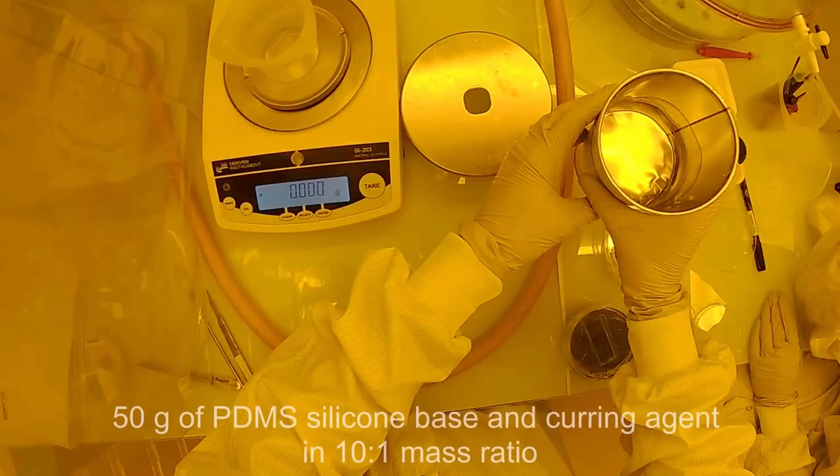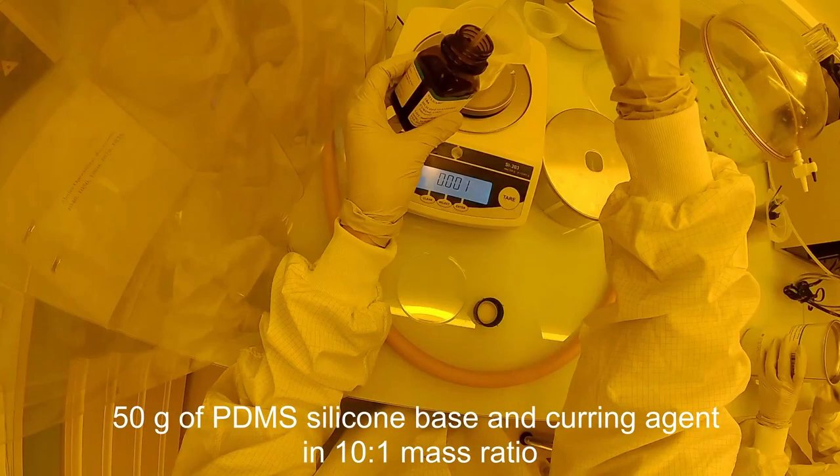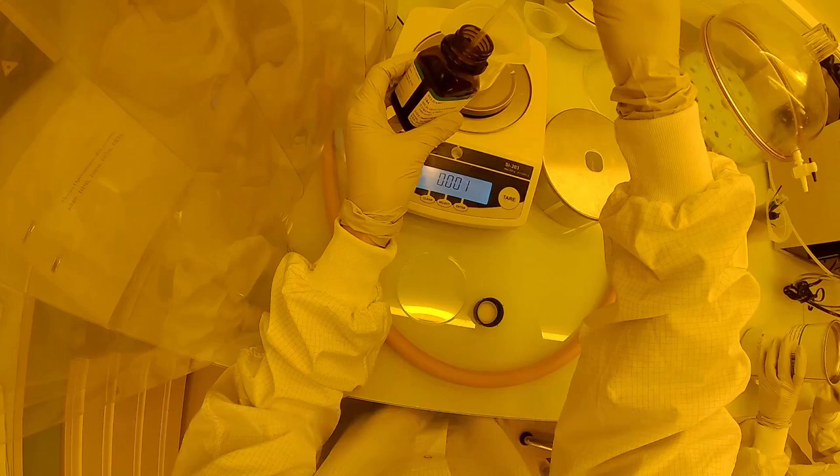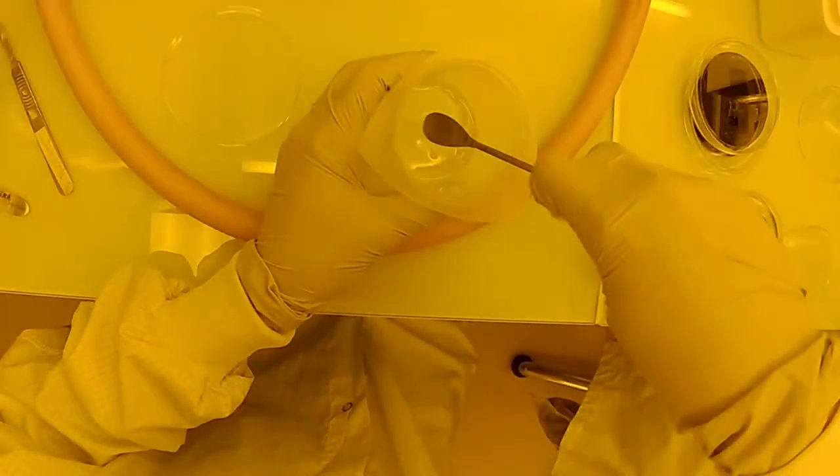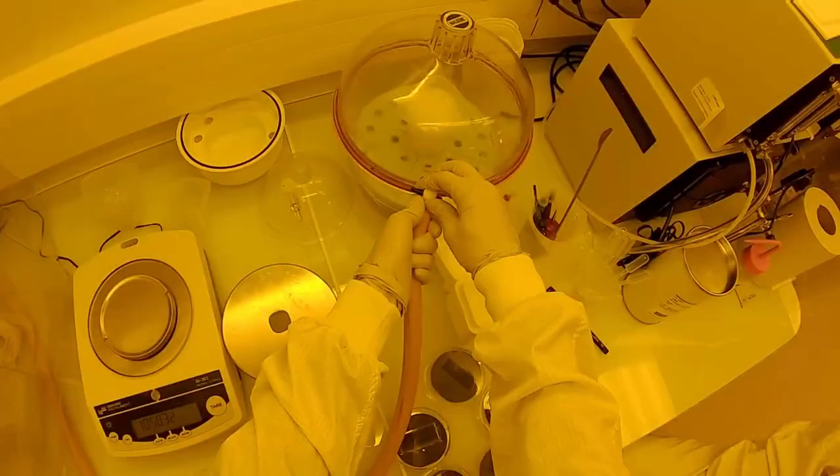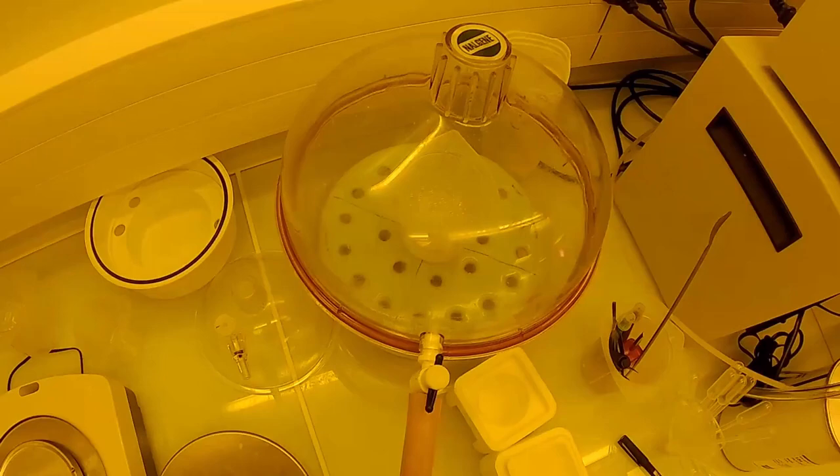First, prepare 50 grams of PDMS silicon base and its curing agent in a 10 to 1 mass ratio. Mix the two ingredients in a beaker with a spatula. After mixing, place the mixture in a vacuum chamber in order to remove all the air bubbles.